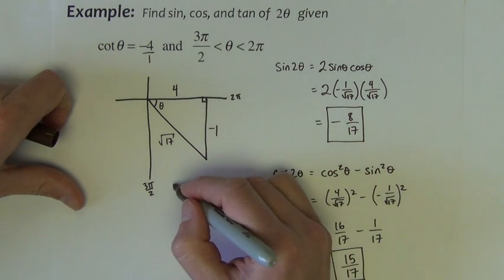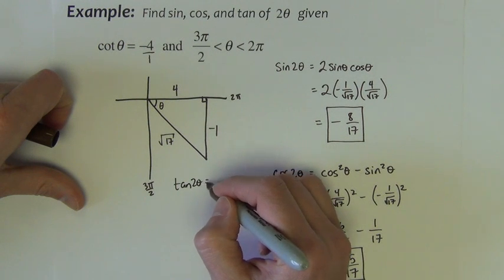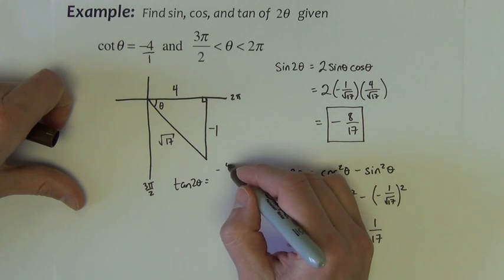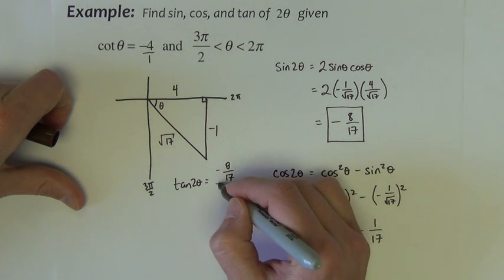And then, finally, we can do tan 2 theta. Tan is the sine over the cosine.